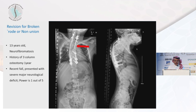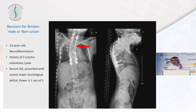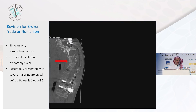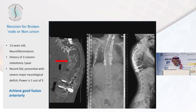Revision for broken rod or nonunion: a 13-year-old with neurofibromatosis, history of three-column osteotomy, presenting to the ER after a fall with 1/5 power in her lower limbs. The reason for failure is not only the broken rod but the nonunion — and in neurofibromatosis, the chance of nonunion is very high. Our goal is not only to add more screws or do osteotomy, but to add appropriate bone graft to allow fusion. Going only from the back with scarring and devitalized tissue might not be enough, so we performed a mini-thoracotomy to place bone graft and achieve fusion.